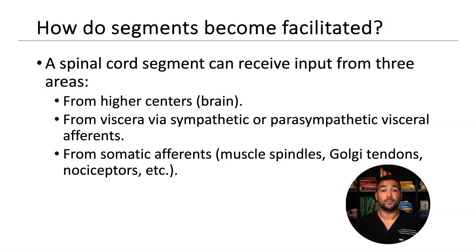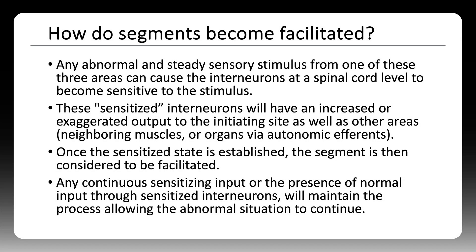Facilitation can be driven by input from three sources: higher centers like the brain, visceral afferents from internal organs, or somatic afferents like muscle spindles and nociceptors. Chronic input from any of these can prime a segment. Once interneurons become sensitized, their output increases — not just locally, but to surrounding muscles and even visceral structures. This increased activity can persist, creating a self-reinforcing cycle unless actively disrupted.